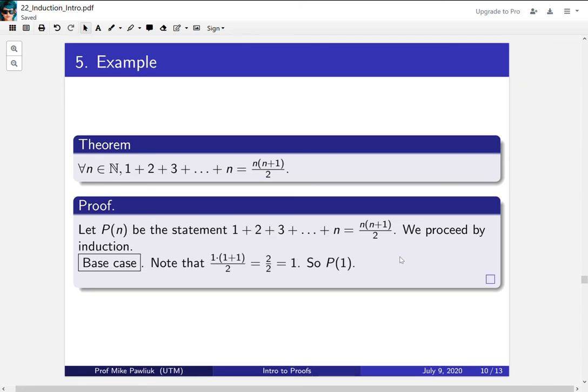The first part is proving the base case. If n equals 1, then you have this equality. What's this expression on the left for n equals 1? It's this, which is 2 over 2, which is 1. And what's the left-hand side of this sum if n equals 1? It's the sum from 1 to 1, which is just 1. So this part right here establishes P(1). It establishes this relationship for n equals 1.